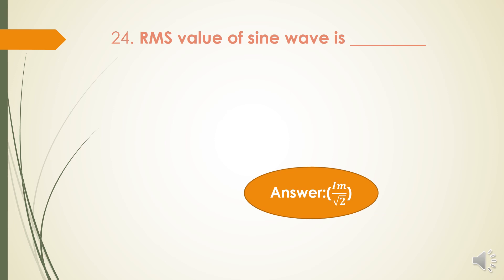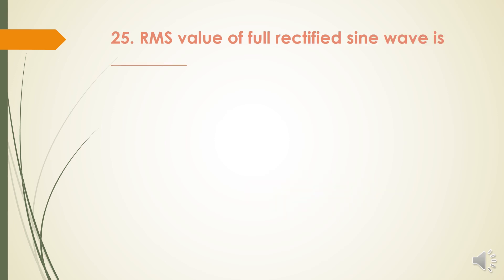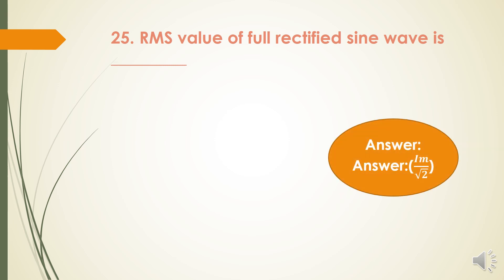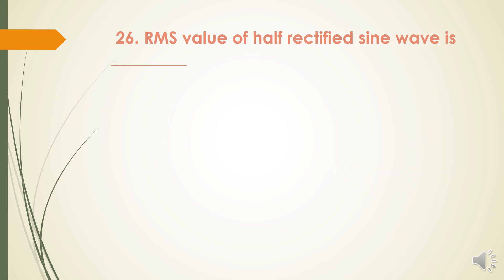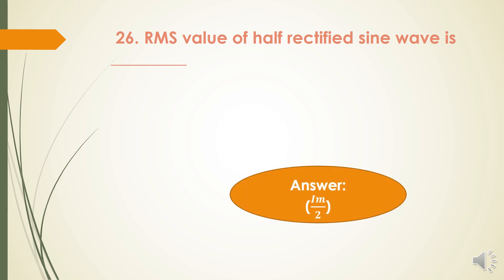Next question: RMS value of a sine wave is Im / √2. Next question: RMS value of a full rectified sine wave is also Im / √2. Next question: RMS value of a half rectified sine wave is Im / 2. For the half-wave rectified sine wave it is Im / 2, where Im is the maximum current.